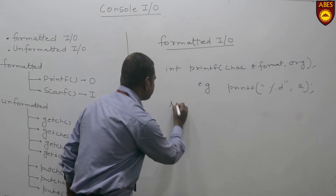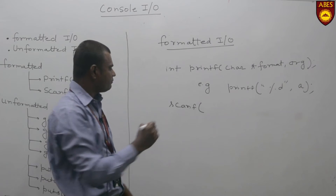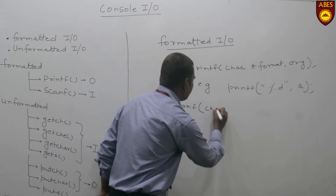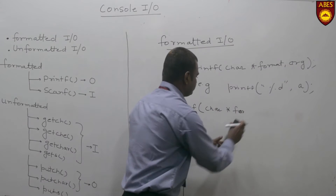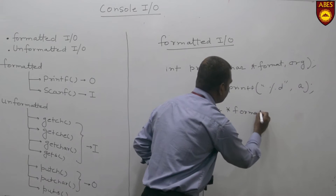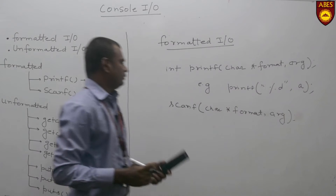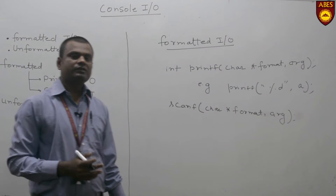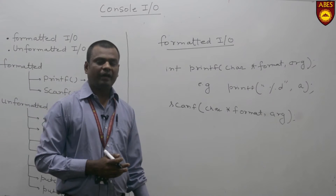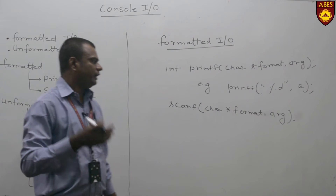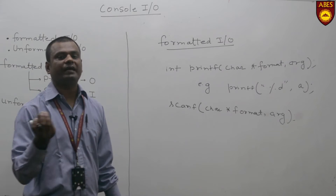The second function is scanf. The prototype of scanf function is: char *format, and arguments. The scanf function returns a value as an integer, and this integer is the number of arguments successfully assigned to the variable.